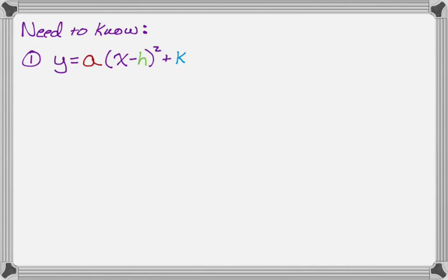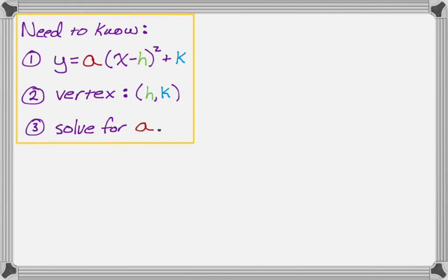The second thing from that equation, you need to be able to identify that the vertex of the quadratic is the ordered pair h comma k. And then the third thing we need to be able to do is solve for a, and we're going to use the given point to do that. So the first step is usually going to be substitution into the equation, so you definitely need to know the equation.